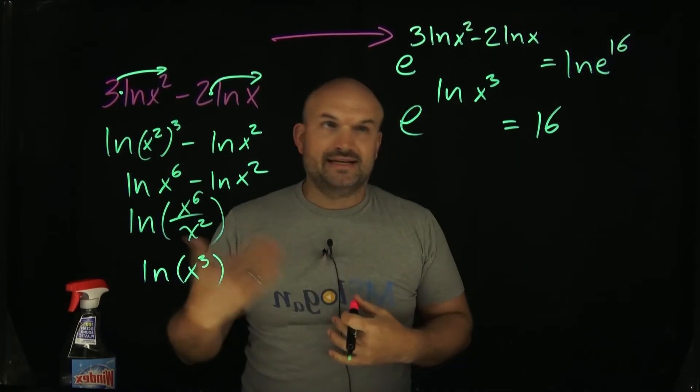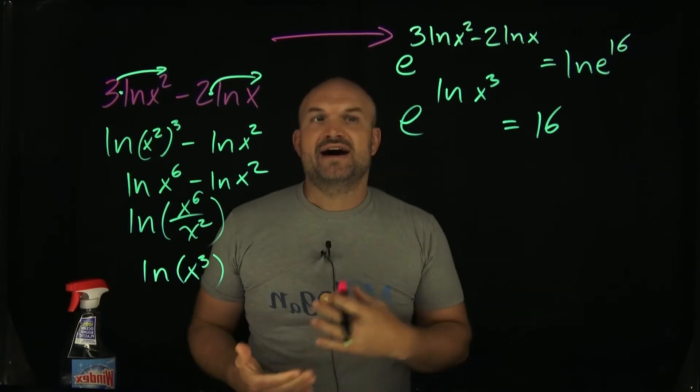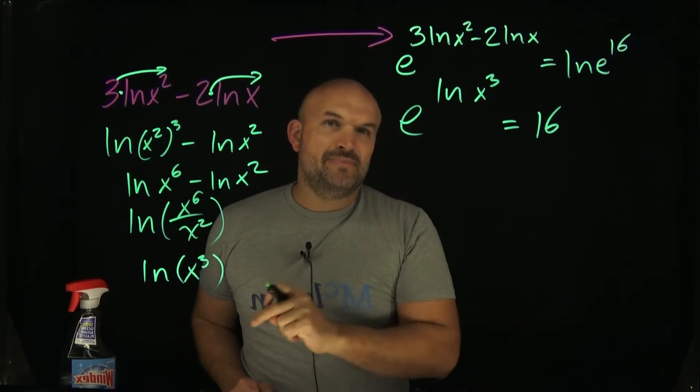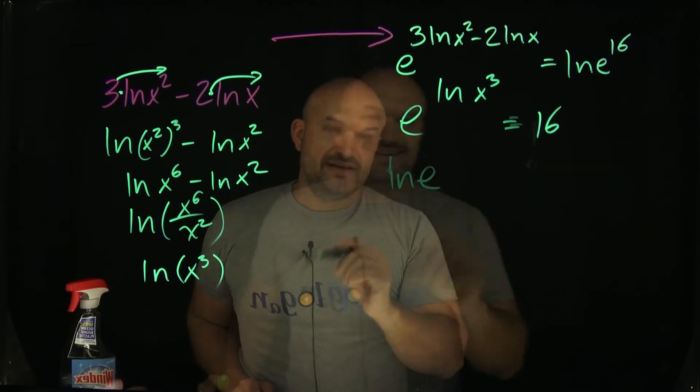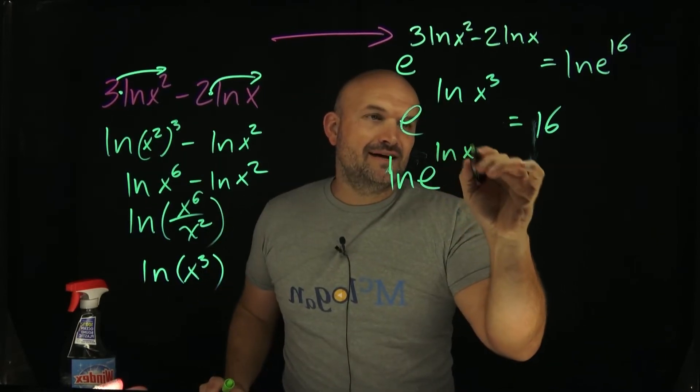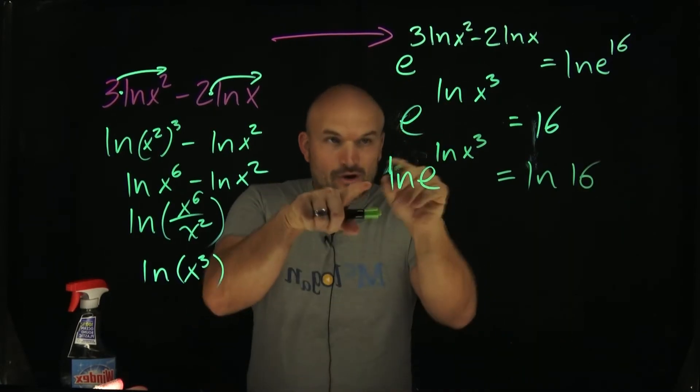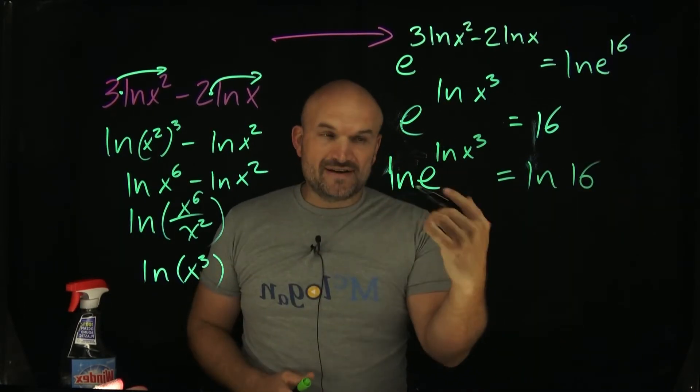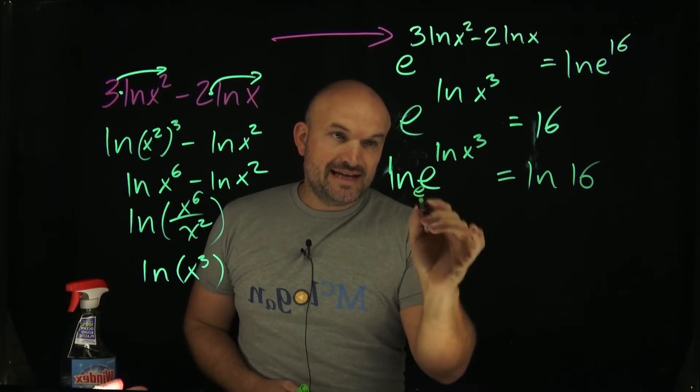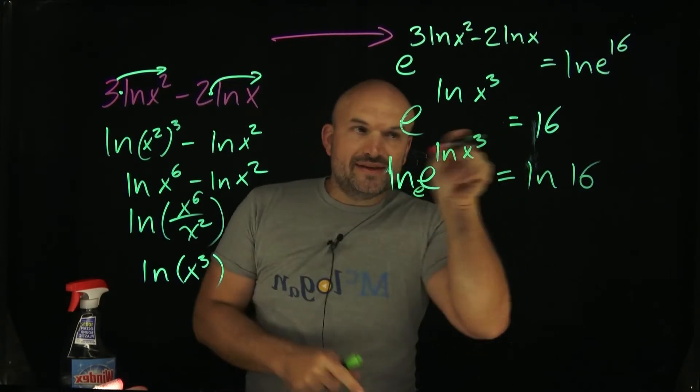Now again, what log do we take? Do we take the natural log? Do we take log base 10, log base 5? We want to always take it as the same base. And remember, natural log has a base of e. So now I have ln of e raised to the ln of x cubed is equal to ln of 16. Okay, now hopefully you recognize here, this is again another rule of exponents. Whenever you have log base e of e, and that's raised to power, then that's just going to equal to that power.